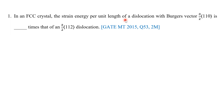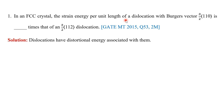Dislocations are usually present in the crystal as a result of accidents that happen during growth of the crystal from melt — that is, during the crystallization process — or as a result of prior mechanical deformation. Unlike point imperfections that are thermodynamically stable, dislocations are not thermodynamically stable because the enthalpy of the crystal increases much more rapidly with the presence of dislocations in comparison to the entropy.